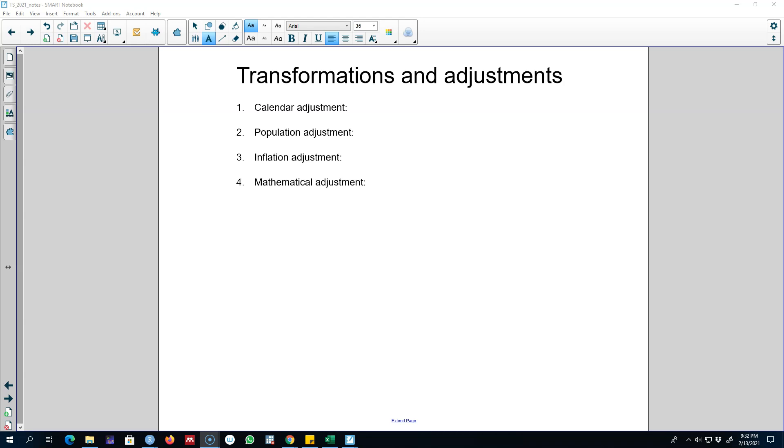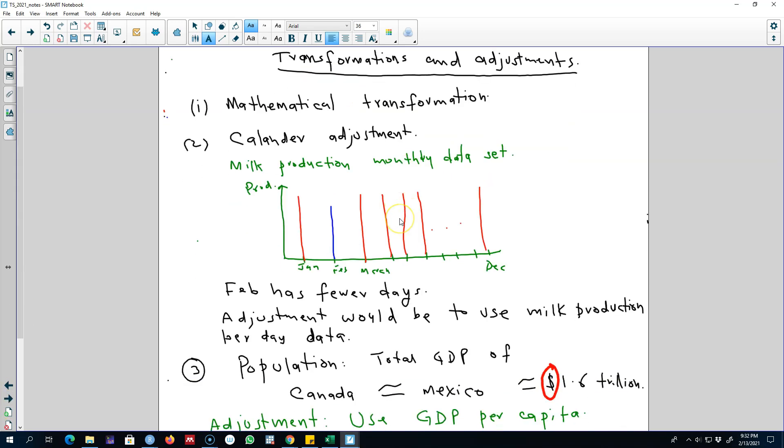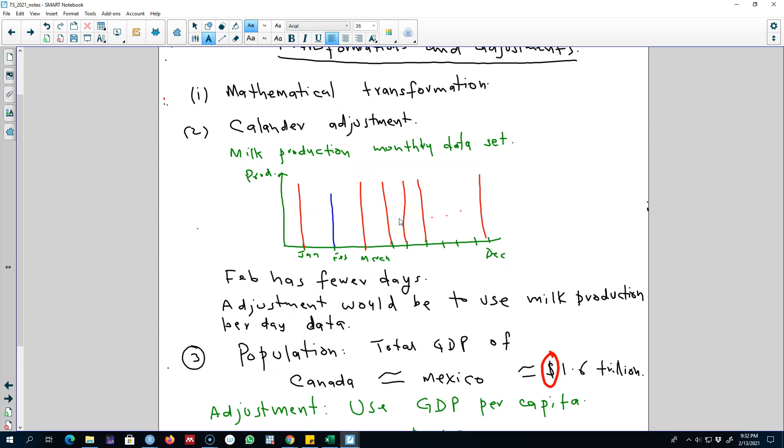Let's look at each of these transformations. The first type is calendar adjustment. You may have monthly data set of milk production, and if you plot this data set, you may get a picture like this. Out of all these, you will see that milk production in one particular month is pretty low, which will be the second month of the year.